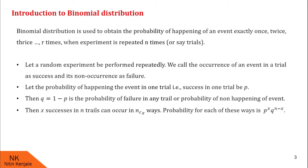Then x successes in n trials can occur in nCx ways. Therefore, the probability of each of these ways is p raised to x into q raised to n minus x. Since out of n trials, success is occurring x times, its probability is p raised to x. Therefore, failure is going to occur n minus x times, and its probability is q raised to n minus x.